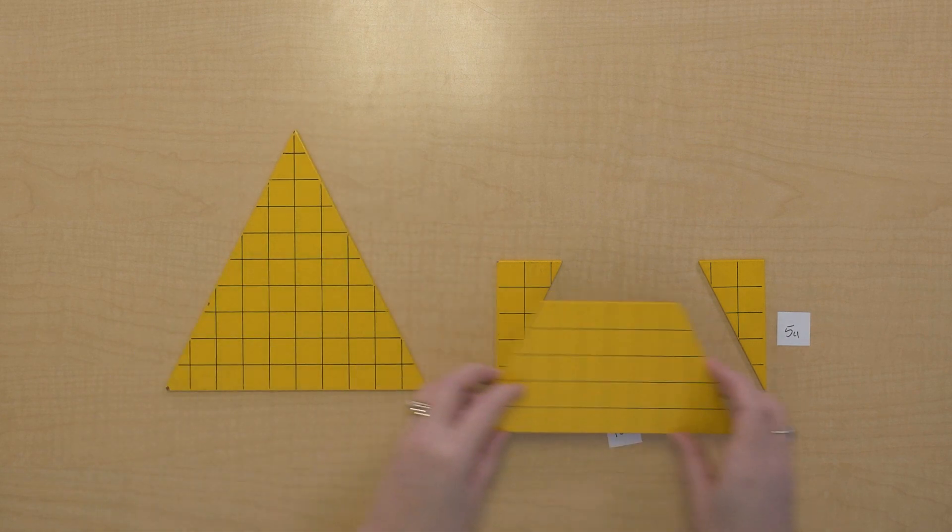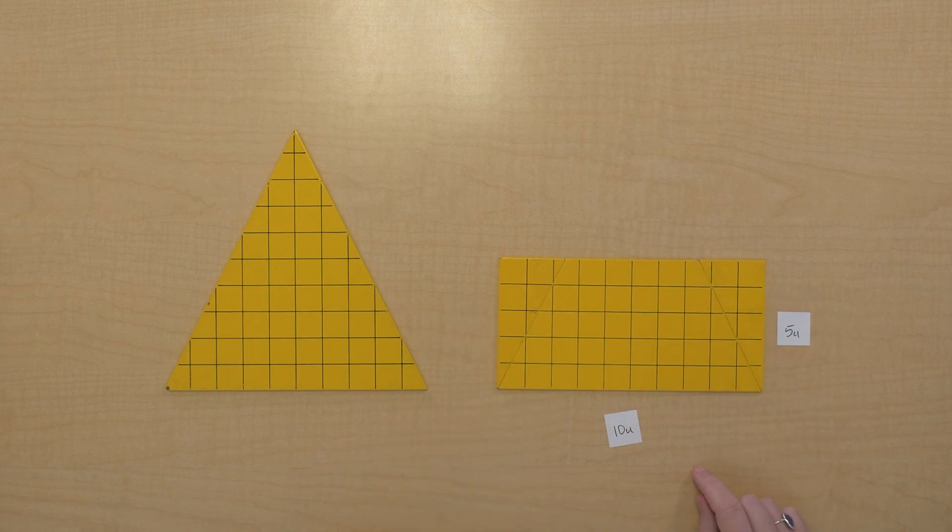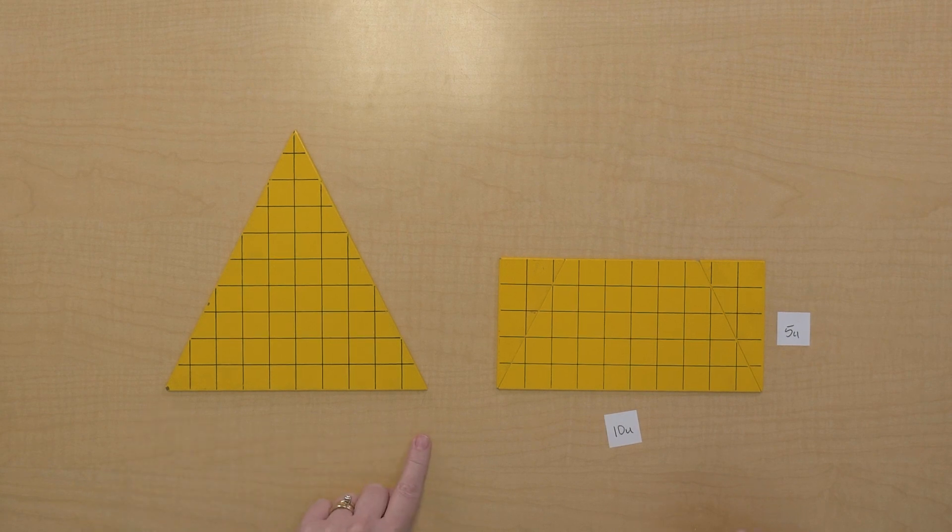Oh, so we actually turned this into a rectangle that had half the height of the triangle. So to get our area, we could use the base of the triangle, but then we could only use half of the height.